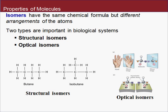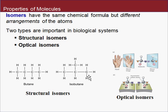When molecules come in different shapes or arrangements, these are called isomers. There are two types: structural isomers and optical isomers. Structural isomers, like butane and isobutane, have the exact same chemical formula but different arrangements of their atoms. Butane is a straight chain of carbons, while isobutane is branched.